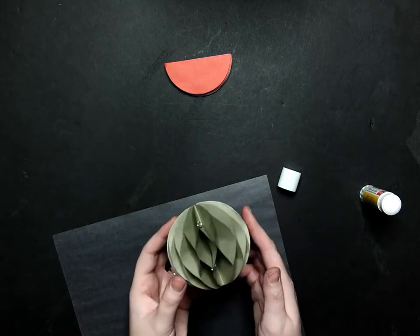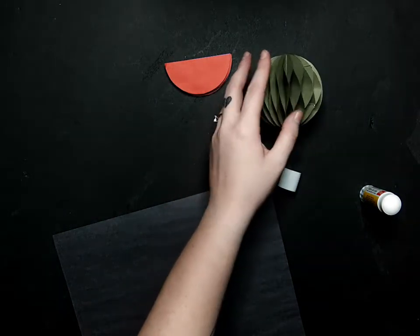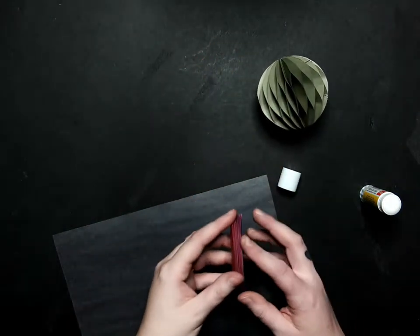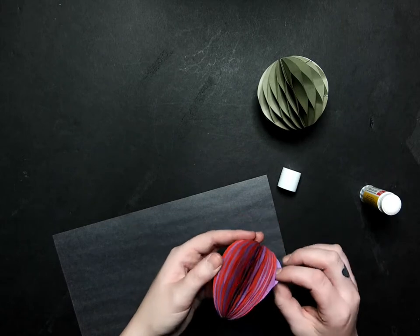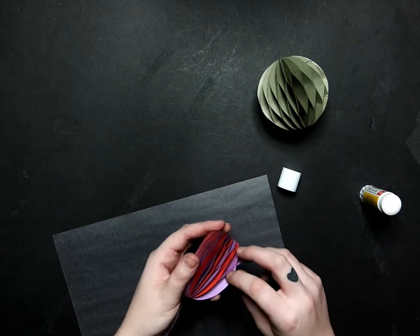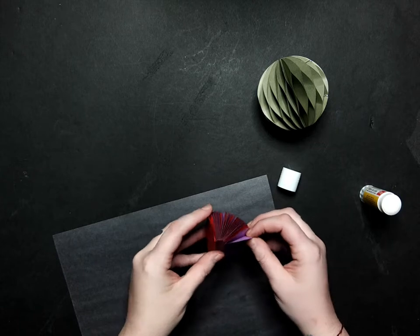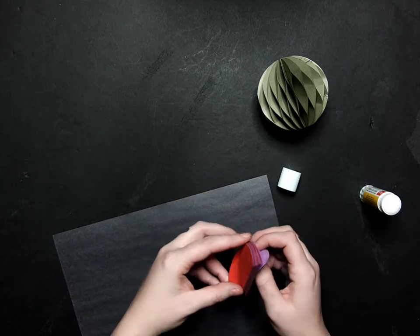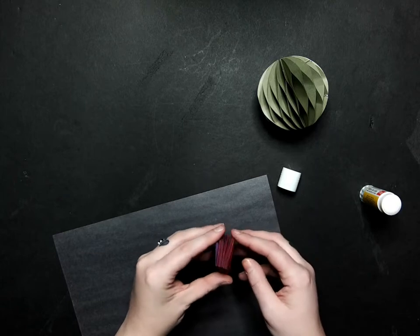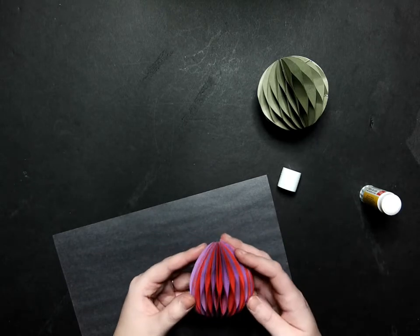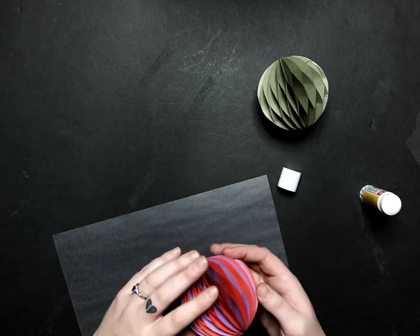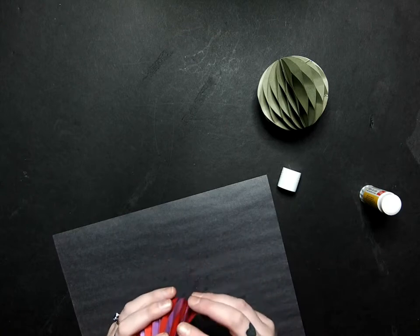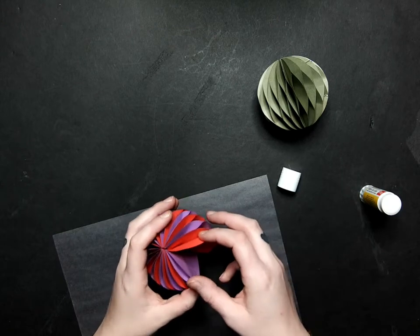And then while that dries we're going to set it down and grab our other one. And we're going to do the same thing. We're going to carefully try and open it just like this. Sometimes it's a little trickier. It doesn't want to work. So you have to kind of ease it open and talk it into doing what we want it to do. There we go.